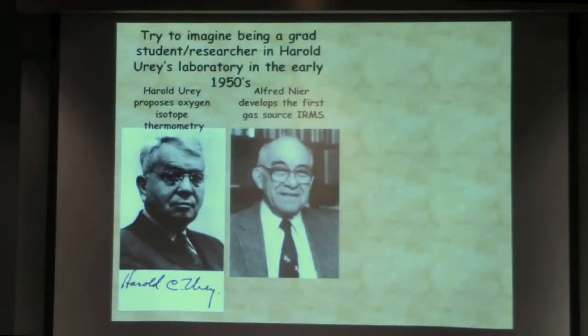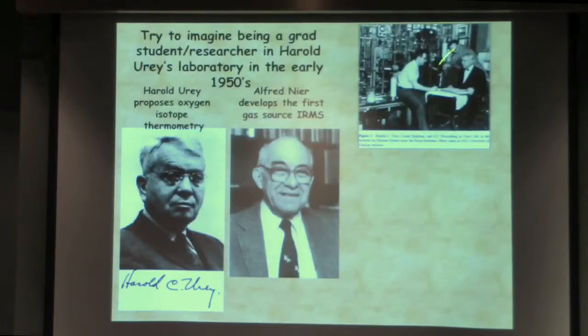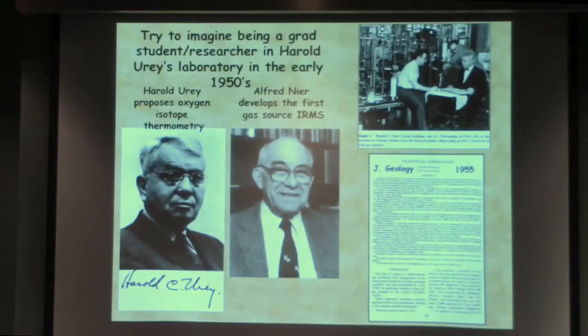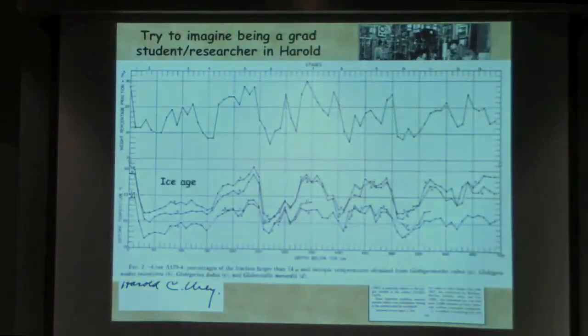The other thing that was going on, which you really needed at the time, was another gentleman, Alfred Nier up at the University of Minnesota, had invented the first gas source mass spectrometer. And so together, the idea and the mass spectrometer, we wind up with people like Cesare Emiliani. That's Jerry Wasserberg, who was also in the lab at this time. These are all National Academy members. Jerry died a couple of years ago, but he was key in planetary geochemistry. And within five years, the first paper was written with the title Pleistocene Temperatures, and this started my field, the field of paleoceanography, using oxygen isotopes to reconstruct what the climate of the planet was like in the past using the shells of planktonic foraminifera.